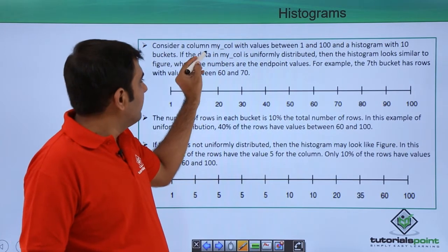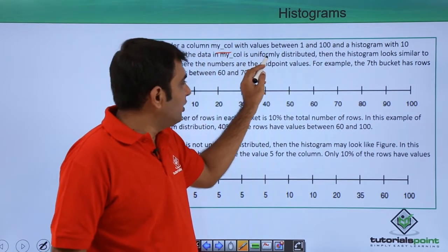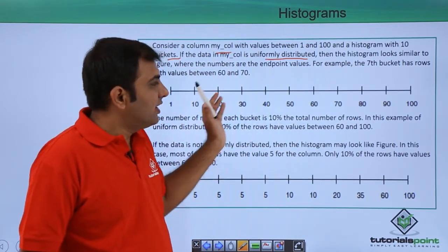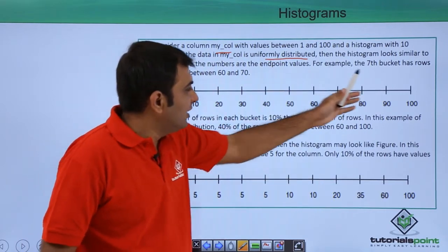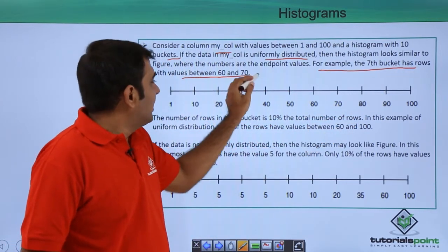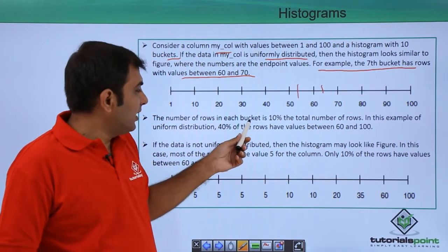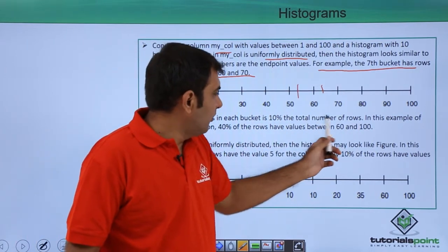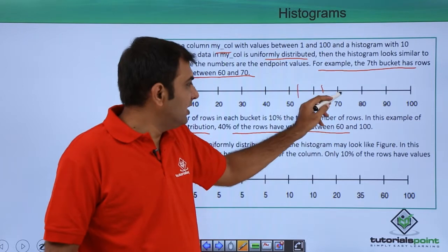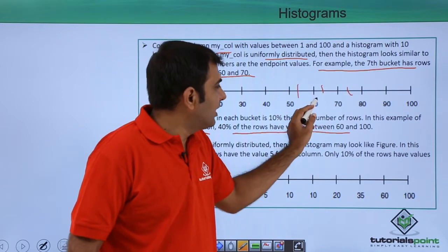Consider a column with values between 1 to 100 and a histogram with 10 buckets. If the data is uniformly distributed, the histogram looks similar to an even distribution - 10 rows per bucket up to 100. That means 40 percent of the data is evenly distributed between 60 to 100, with 10 rows in each bucket.